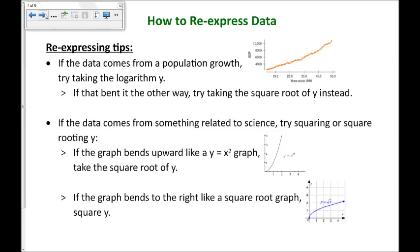If the data comes from something related to science, a lot of scientific things tend to deal with things being squared, like gravity is squared, friction. Those kinds of things have to do with squared relationships. So try squaring or square rooting y. In other words, if the scatter plot tends to be curving up similar to a parabola, then try doing the opposite and taking the square root of y. Or if the graph bends the other way, bends forward kind of like a root equation, try squaring y, doing the opposite to straighten it out.